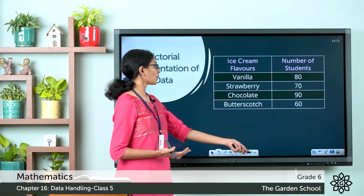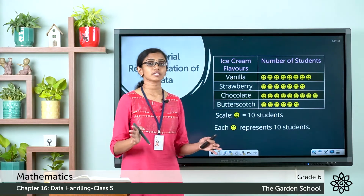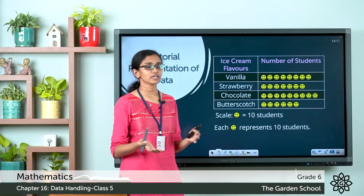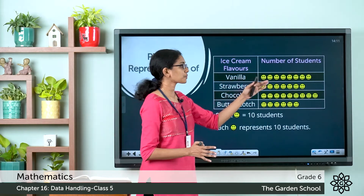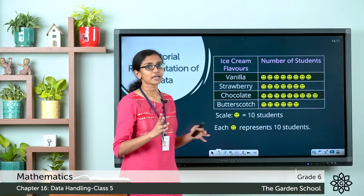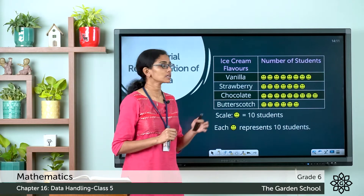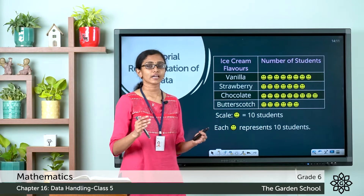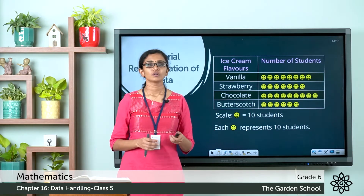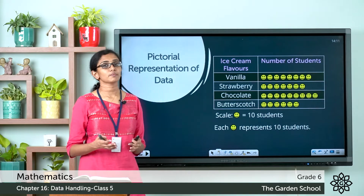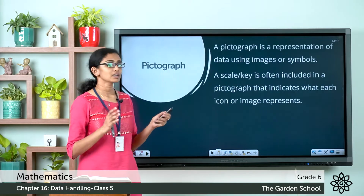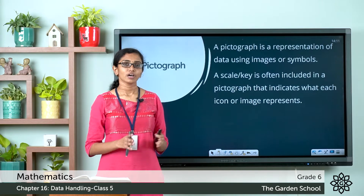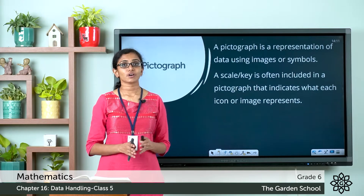Let's take the scale as one smiley face represents 10 students. For vanilla, liked by 80 students, we can draw 8 smiley faces — each represents 10, so 8 smileys represent 8 × 10 = 80 students. So we have changed the scale. Today we saw examples where we use symbols or icons to represent data, and this kind of representation is called a pictograph.